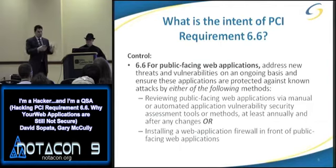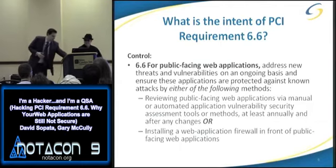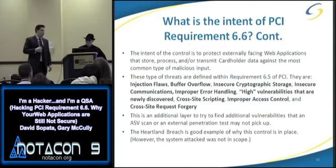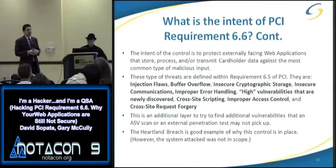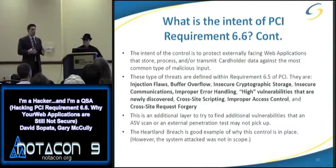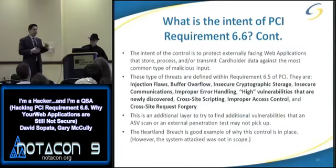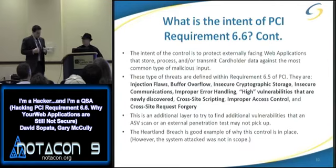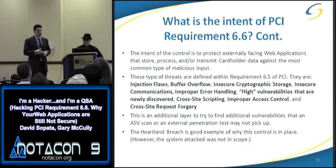What's the intent of the control? To prevent malicious input from getting into your web application — that's essentially what it's trying to prevent. There's also a prior control called 6.5 that addresses other vulnerabilities, including injection flaws, buffer overflows, insecure cryptographic storage, and others. Those are all things they're trying to prevent.